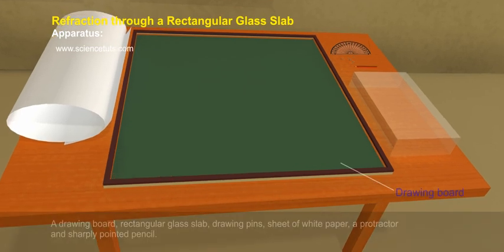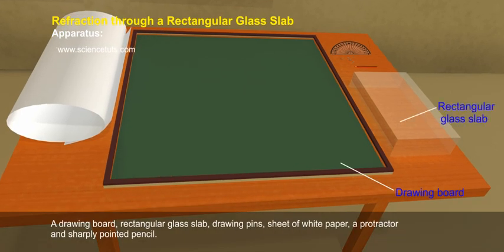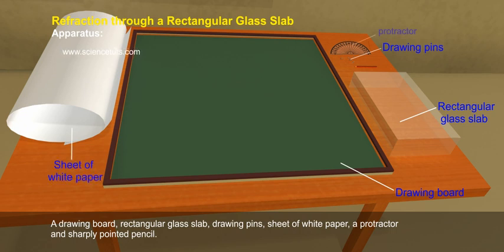Apparatus: A drawing board, rectangular glass slab, drawing pins, sheet of white paper, a protractor, and sharply pointed pencil.